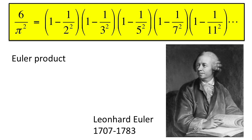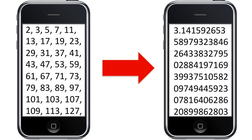Here is an infinite product, called an Euler product, involving pi and all of the primes. The more primes you have, the more accurately you can approximate pi.